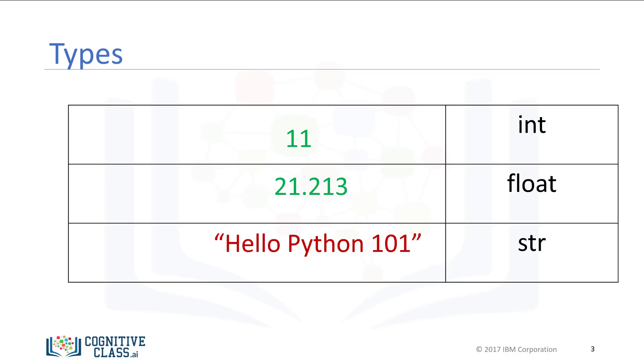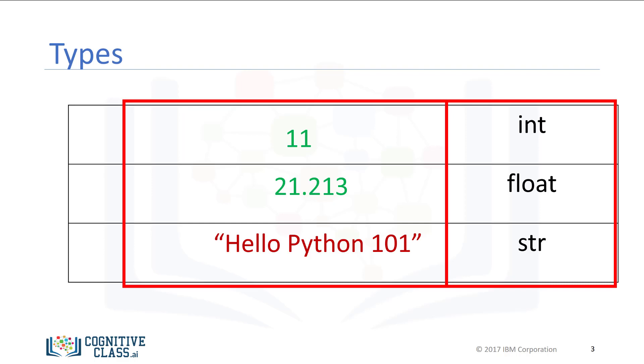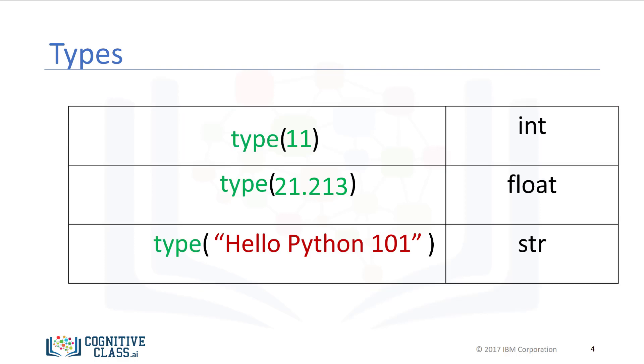The following chart summarizes three data types for the last examples. The first column indicates the expression. The second column indicates the data type. We can see the actual data type in Python by using the type command.